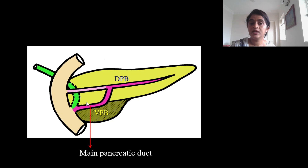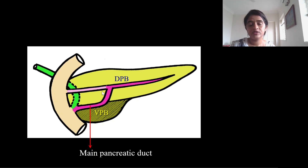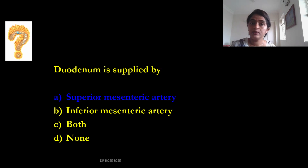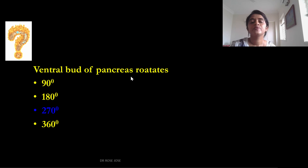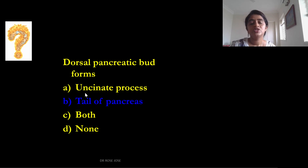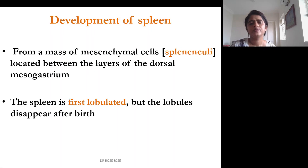Regarding pancreatic ducts: initially there is one duct for each bud. A communication forms between them — the anastomotic channel. The proximal portion of the dorsal pancreatic duct degenerates, so the duct of the ventral pancreatic bud, with the anastomosis and the distal end of the dorsal pancreatic duct, join to form the main pancreatic duct. If the proximal dorsal portion persists, it forms the accessory pancreatic duct. The ventral bud rotates 270 degrees, and the dorsal pancreatic bud forms the tail; the uncinate process is from the ventral bud.